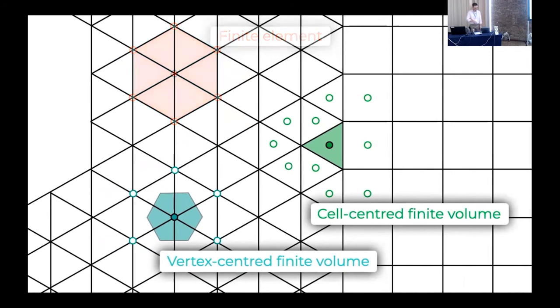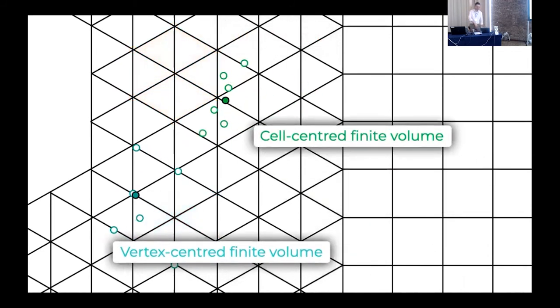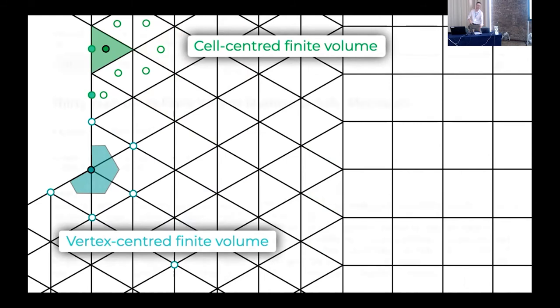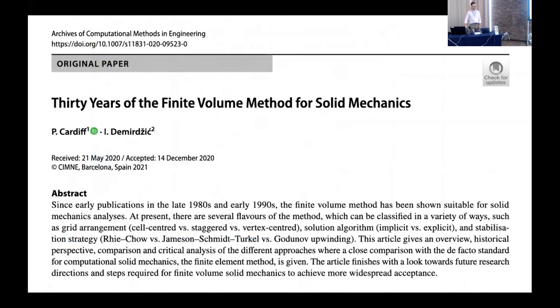One convenient feature of vertex-centered is that you have unknowns directly on the boundary, whereas cell-centered does not — though you can add them at the cost of extending the linear system. This is important for traction boundary conditions in solid mechanics. I often recommend a long review paper covering 30 years in this broad area of finite volume methods for solid mechanics, co-authored with Demirdžić, with around 600 references.